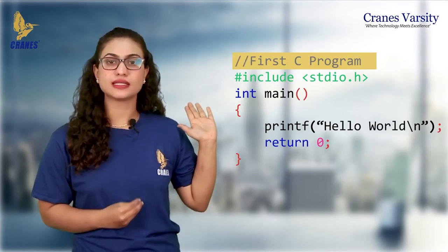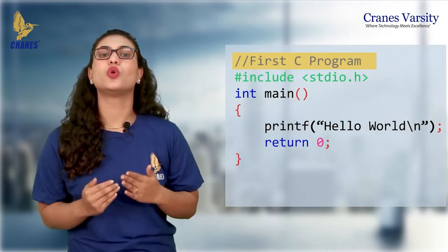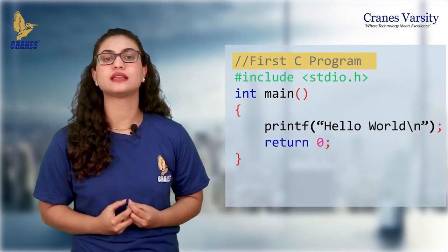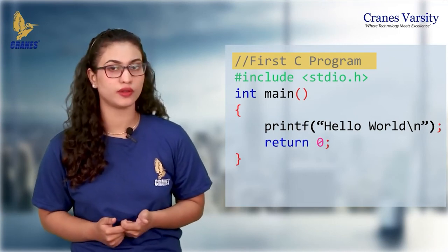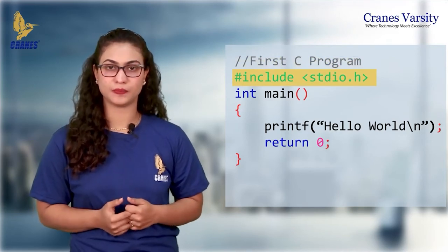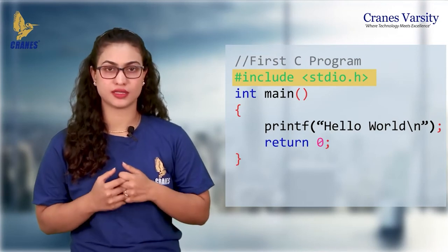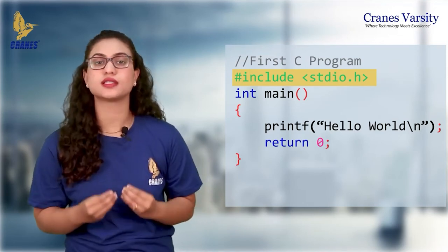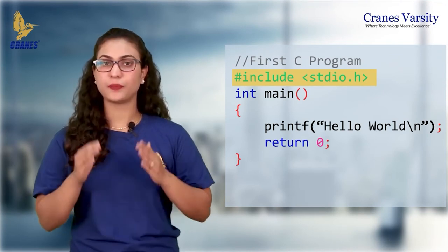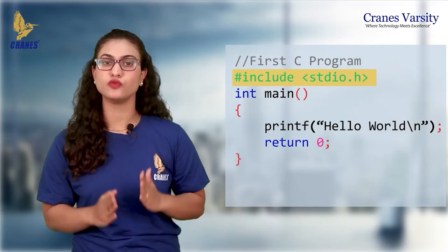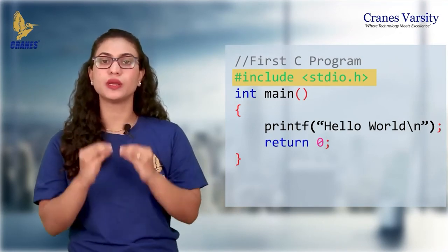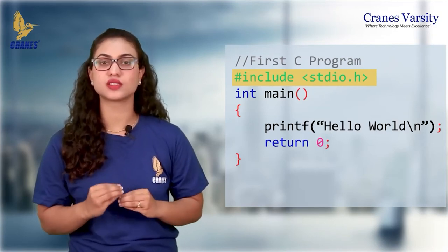If you can see, this entire code over here is known as a source code — the entire file which consists of the program. The program is nothing but the input which is acting like a source code. The next line is the header file written right after the commented line. This line is known as a preprocessor directive that is preprocessed by the preprocessor. Before compilation, the preprocessor preprocesses the code — the line that starts with hash.